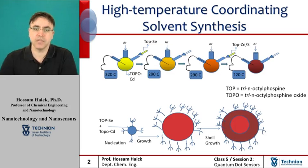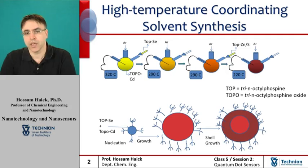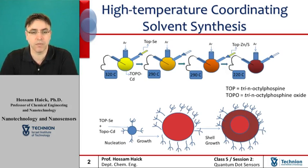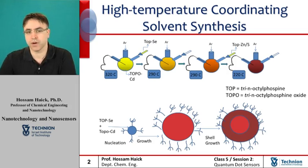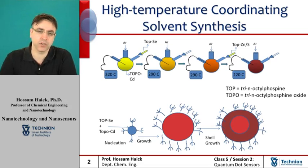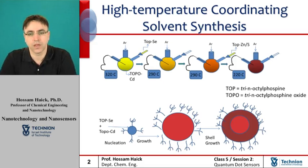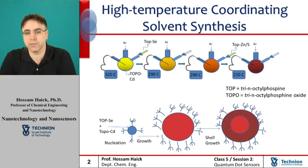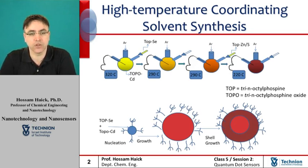Once the desired size has been obtained, growth is quenched by lowering the temperature of the reaction mixture. The growth rate and maximum particle size values can be manipulated by controlling one or a combination of the following parameters: the initial precursor concentration, the growth temperature, and the length of the growth period. It is also possible to introduce additional precursor material into the reaction vessel during the growth period in order to obtain larger quantum dots and improve the size distribution.